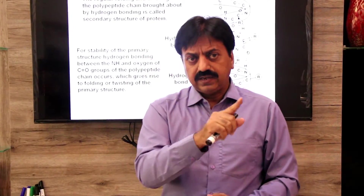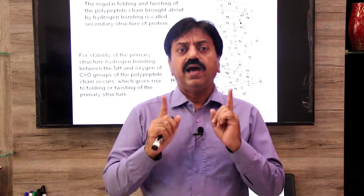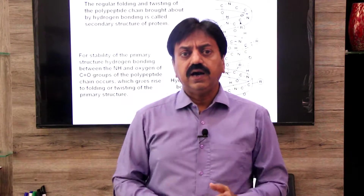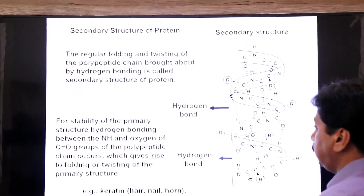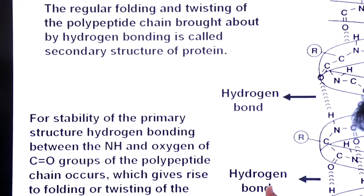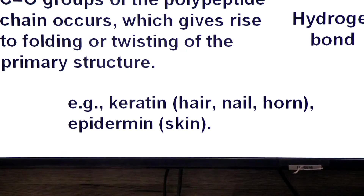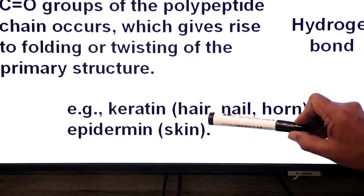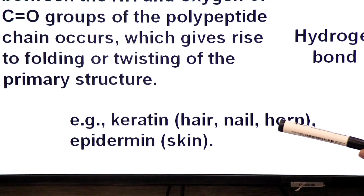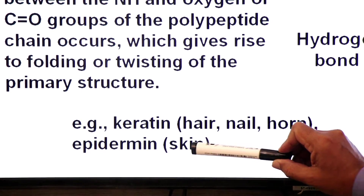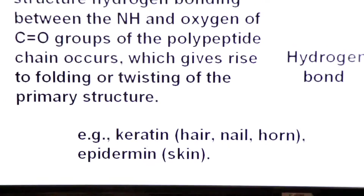Within the secondary structure, we will study two more points: alpha helix and beta pleated sheet. An example that has been best studied at the secondary level is keratin, which is found in our hair; nails are also structured due to keratin, as are animal horns. The secondary structure of epidermin, a protein in our skin, has also been determined.